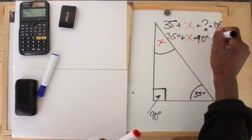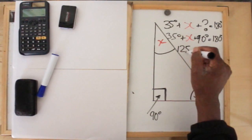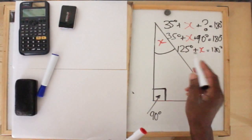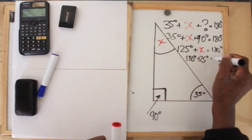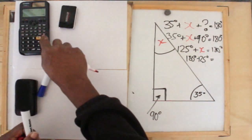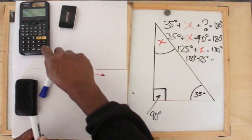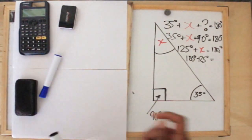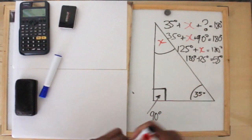So now we do have two angles. We can change our sum to: 35 degrees plus x plus 90 degrees equals 180 degrees. 35 plus 90 equals 125, so we can rewrite it as 125 degrees plus x equals 180 degrees. Therefore we subtract 125 from 180: 180 minus 125 equals 55 degrees. So x equals 55 degrees.